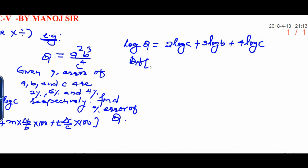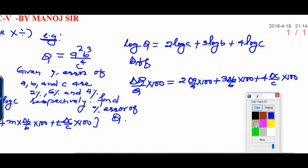And finally, when you differentiate, you get delta Q upon Q into 100. That will be 2 delta a upon a into 100 plus 3 delta b upon b into 100 plus 4 into delta c upon c into 100. When you see carefully here, one thing is important, this percentage error is given.